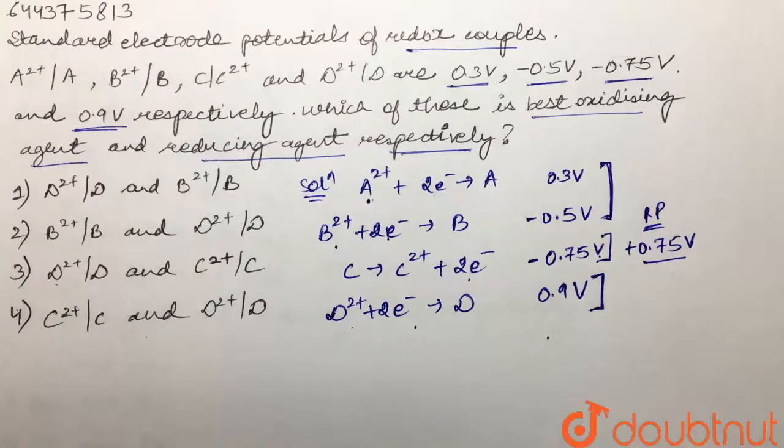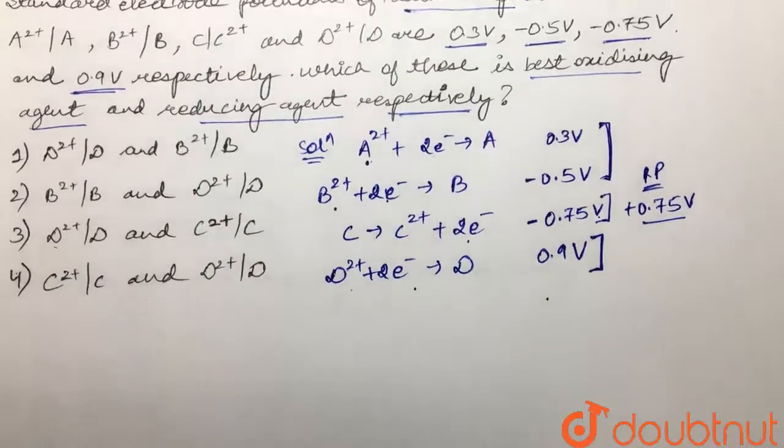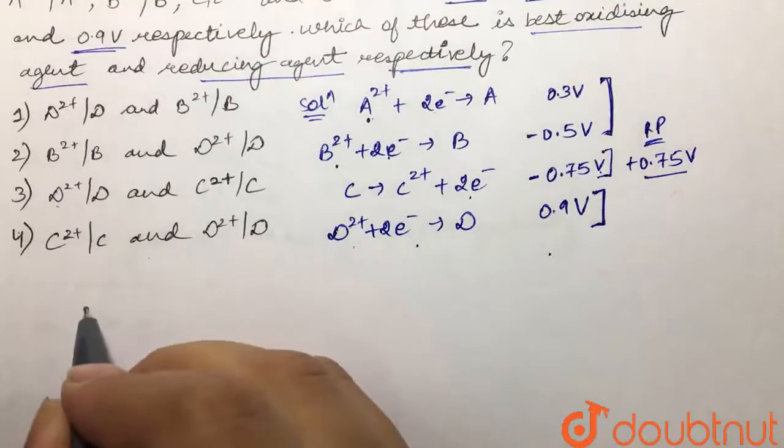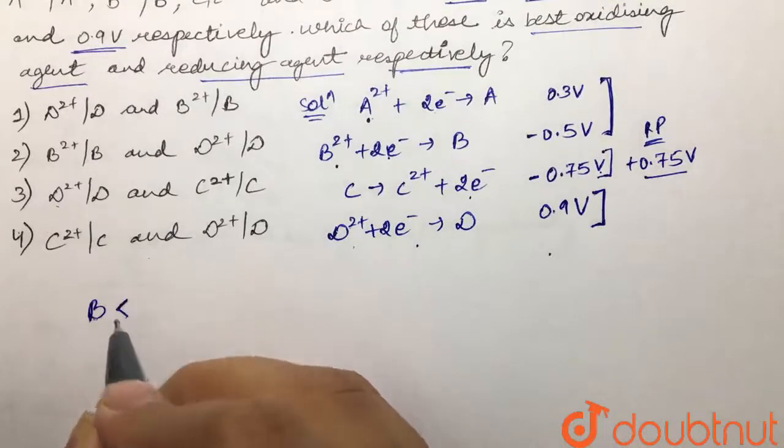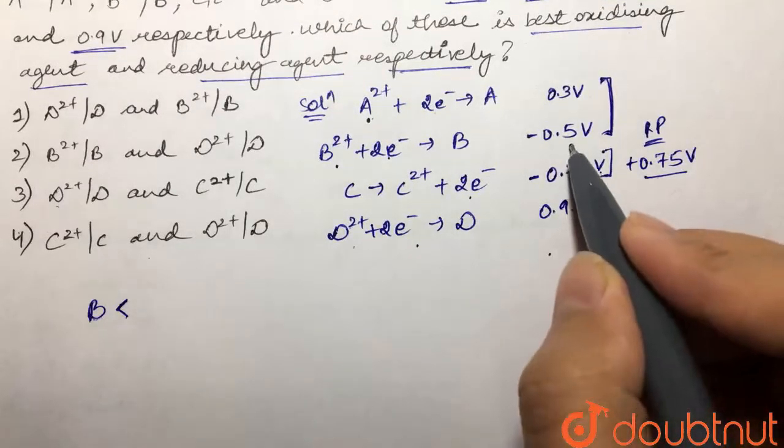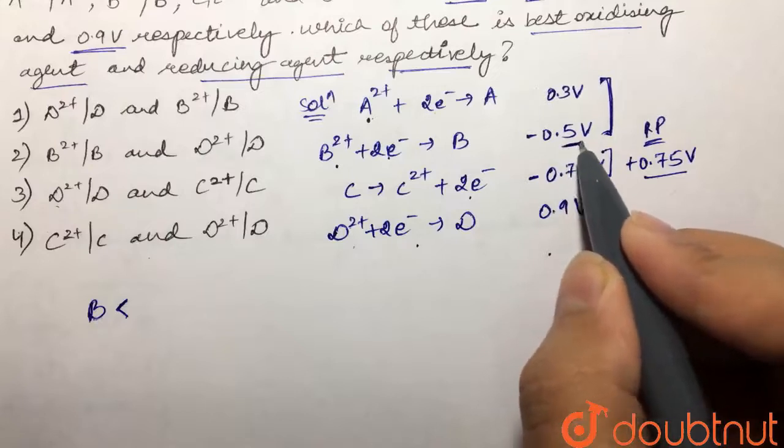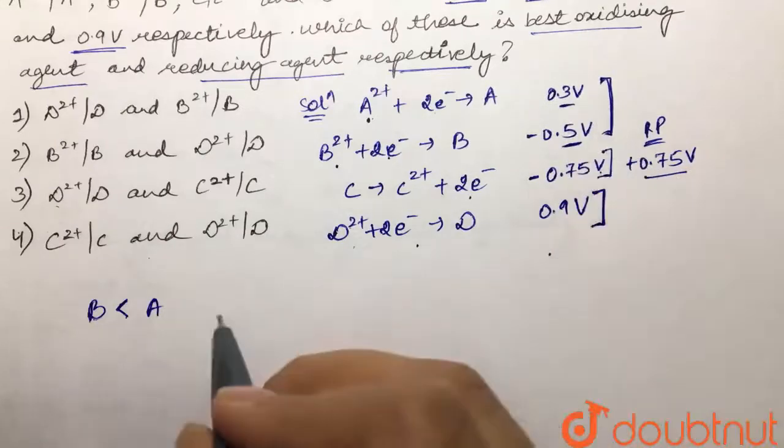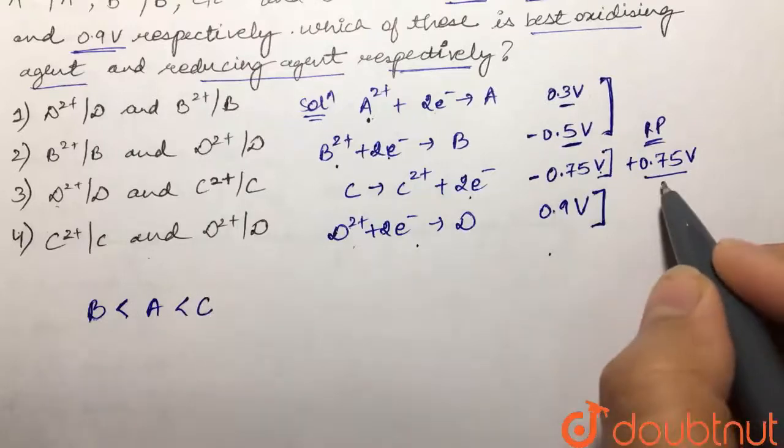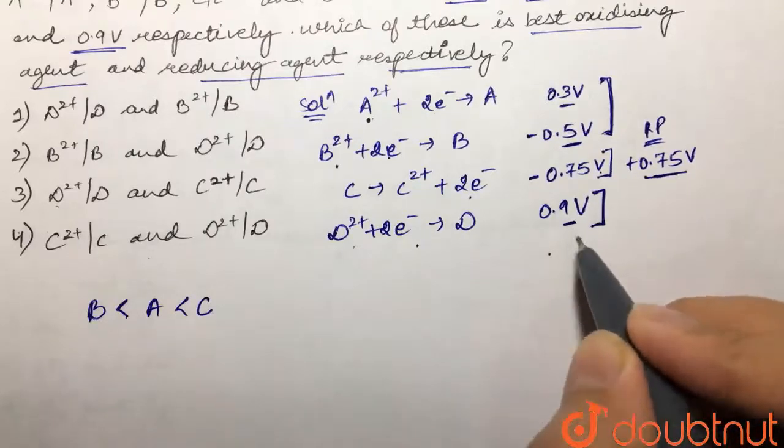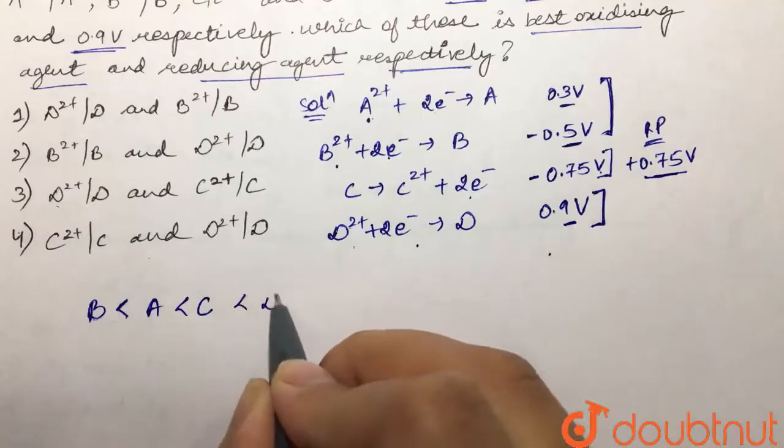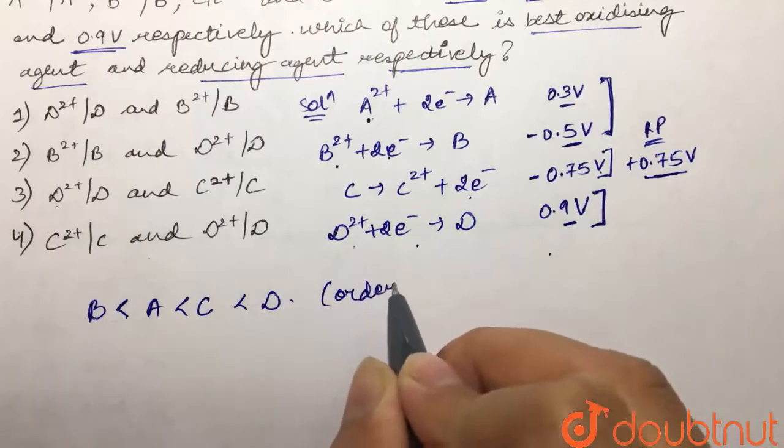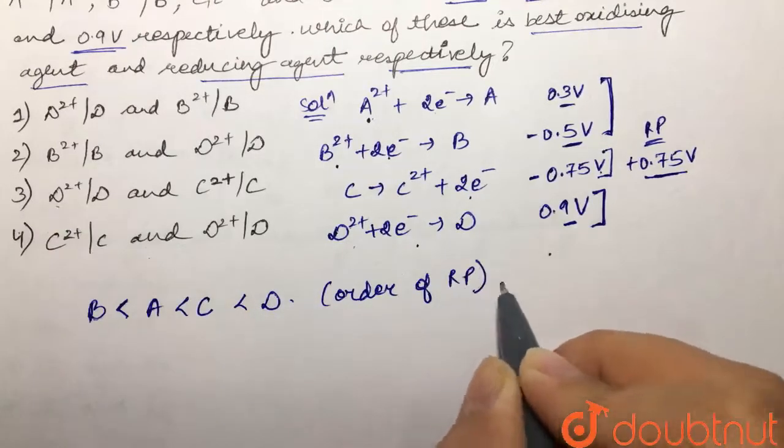So now we are going to write down the order of the increasing reduction potential. It would be B is having the least reduction potential of all, which is -0.5V. Then we have A at 0.3V, and then we have C at 0.75V. And the maximum is D. So this is our order of reduction potential for these redox couples.